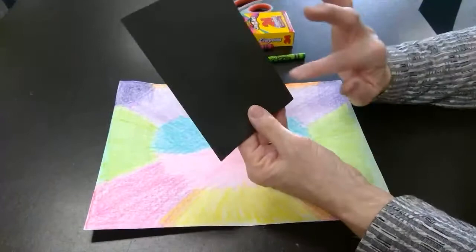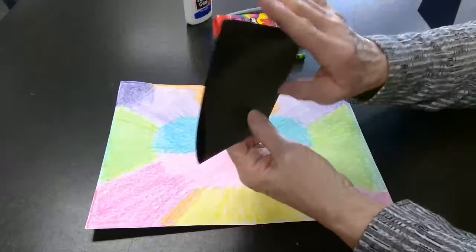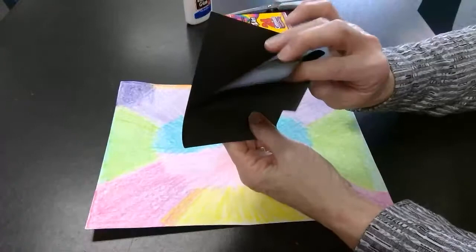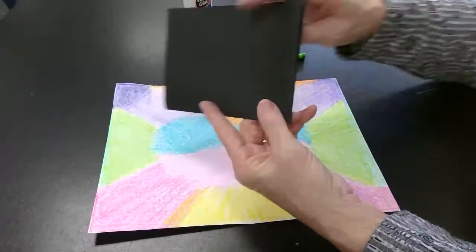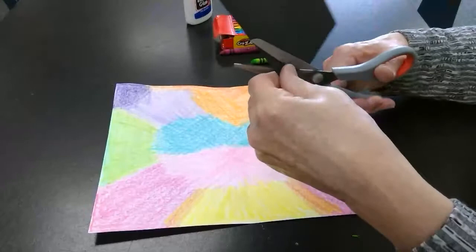Now I kind of want to leave my outside edge, this open edge, attached. So I don't want to cut that off. If you do cut it off, it still is a good design. Everybody's will be a little bit different. But I'm going to take these folded sides and I'm just going to start cutting in, kind of like when you cut snowflakes.